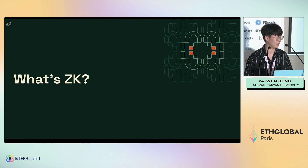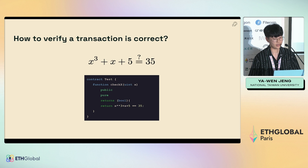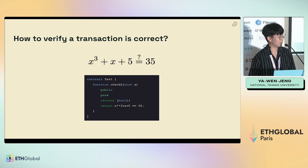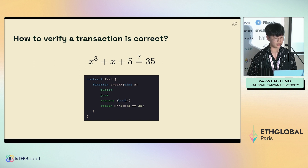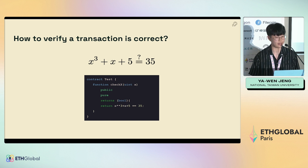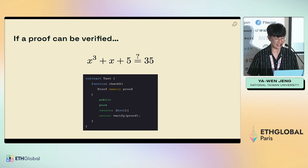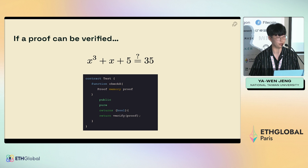I'll introduce a little bit about ZK — really short. Here's an example of how we verify a transaction is correct. Normally you provide a plain text X so the miner and others can verify the equation. What ZK does is that we provide a proof and you don't know what the equation is. On-chain, it just verifies a proof and tells you if it is correct or not.